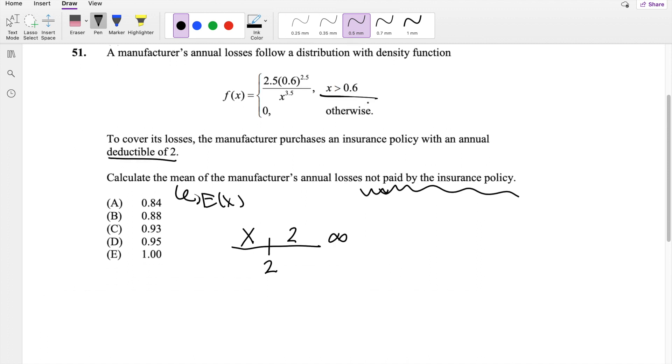So just dive right in. And then this x is greater than 0.6, so this has to be starting from 0.6. As always, the expectation is going to be just x, right? The x times the value times the probability function, which is 2.5 times 0.6 to the 2.5, divided by x to the 3.5.